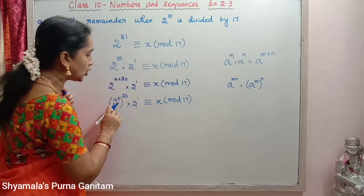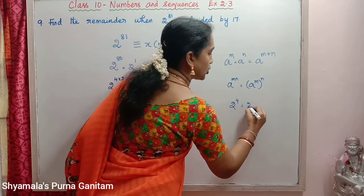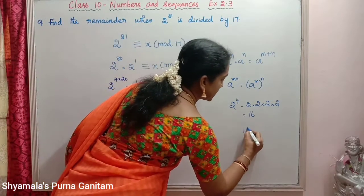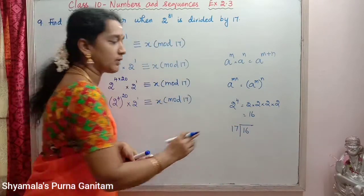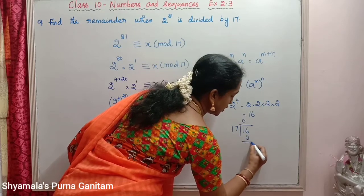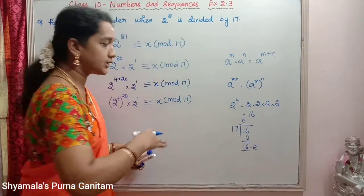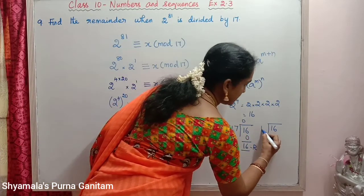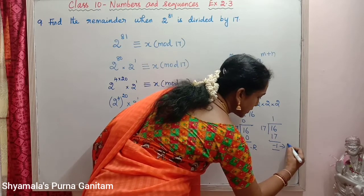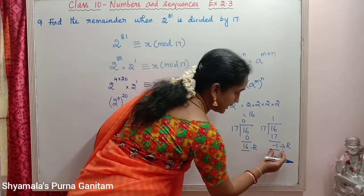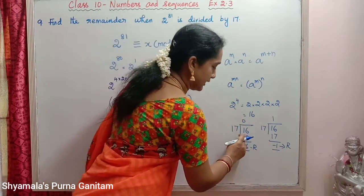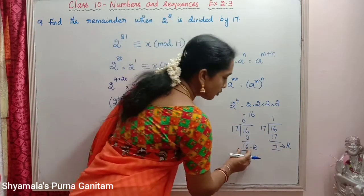Now, 2 power 4 = 2 × 2 × 2 × 2 = 16. When dividing 16 by 17, 17 goes 0 times, so the remainder is 16. Alternatively, 17 × 1 = 17, and 16 − 17 = −1. So the remainder of 16 divided by 17 is the same as −1. Therefore, instead of 16, we can write −1 as the remainder.